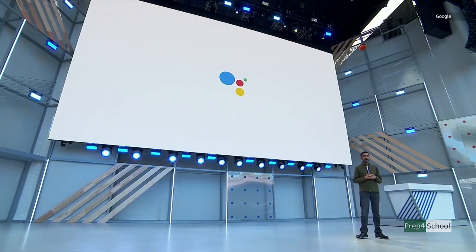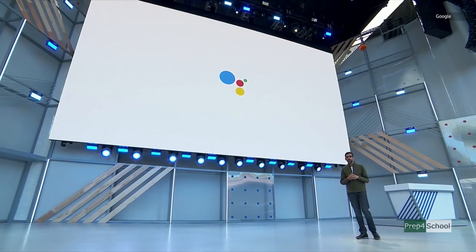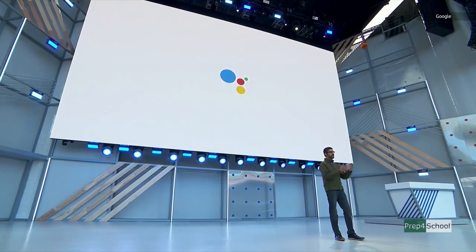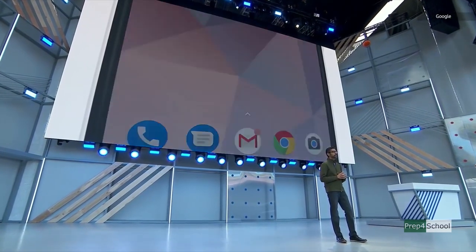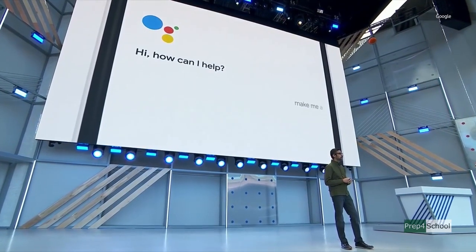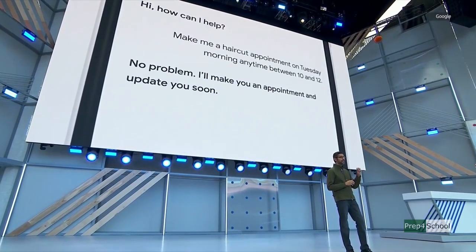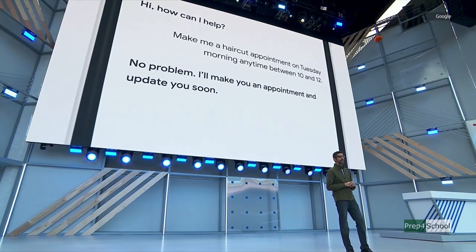60% of small businesses don't have an online booking system set up. We think AI can help with this problem. Let's say you want to ask Google to make you a haircut appointment on Tuesday between 10 and noon. What you're going to hear is the Google Assistant actually calling a real salon to schedule the appointment for you. Let's listen.